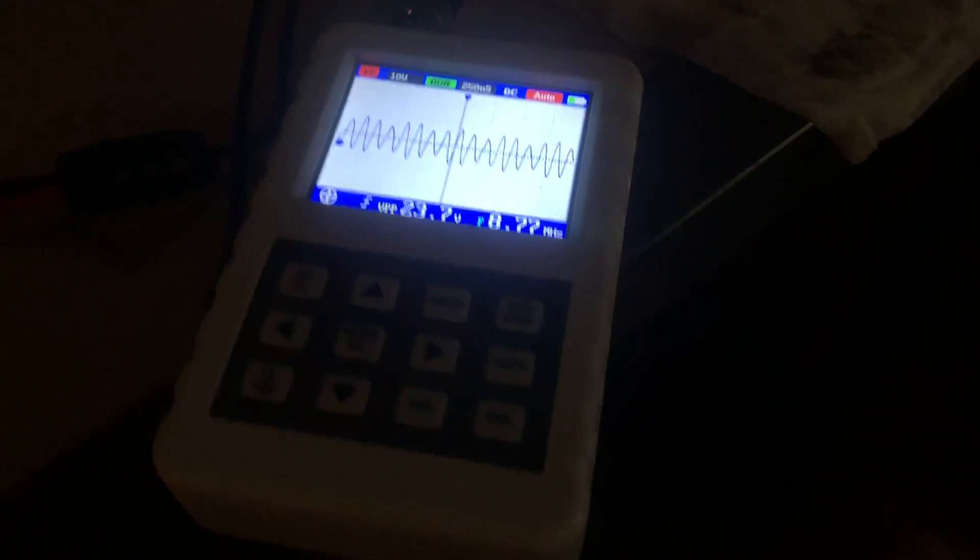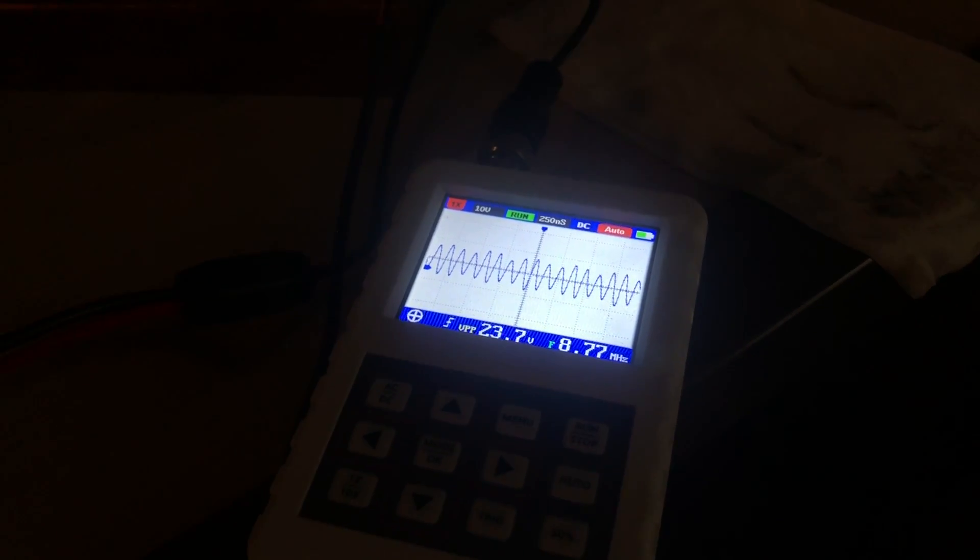I adjust it until I get oscillation. And now we've got a lower resonant frequency, which makes sense. It's a little unstable. There we go. 23.7 VPP.